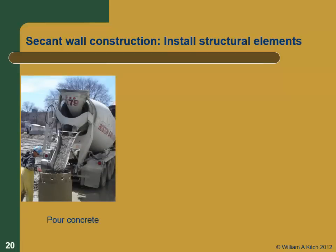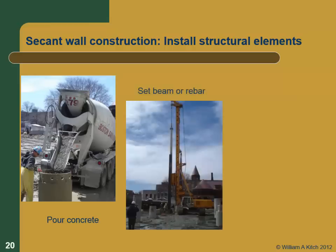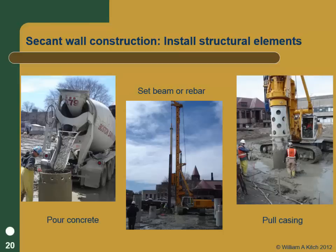With a cased hole, you don't need a tremie — you back the concrete truck up directly. You place the concrete, then set the rebar or structural beam — in this case a rebar cage — then pull the casing using the oscillator. Timing is critical: wait too long and you can't pull the casing; pull it too soon and soil intrudes from outside. If you partially fill the casing and then pull, you must maintain enough head of concrete inside. In this setup, concrete is placed with retardant, the rebar is set, and then the whole casing is pulled out cleanly.